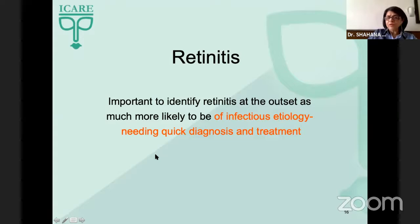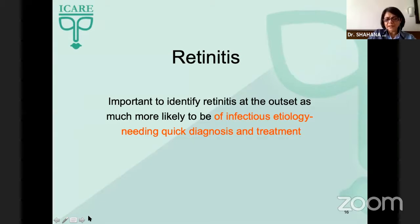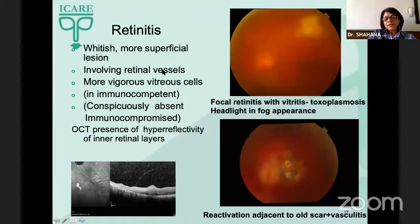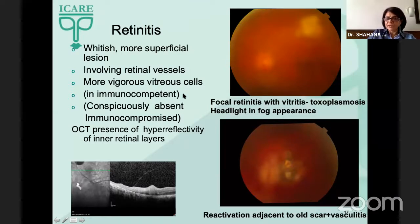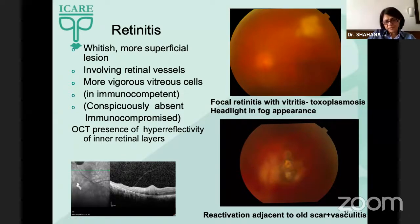Coming to retinitis, it's very important to identify this right at the outset because a majority of these lesions are infectious, and we need a quick diagnosis and quick treatment. A retinitis lesion will be whitish and more superficial. There should be a vigorous vitreous reaction in most immunocompetent individuals; if the person is immunocompromised, vitreous cells will be conspicuously absent. OCT through the lesion showing inner layer hyper-reflectivity will confirm retinitis.